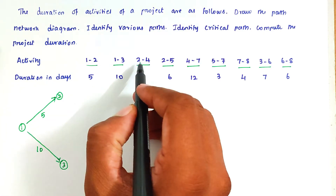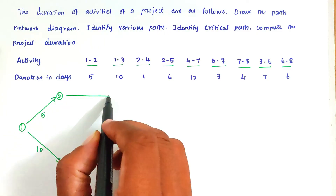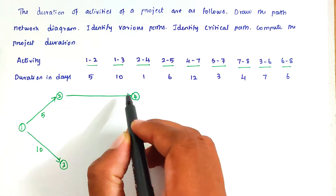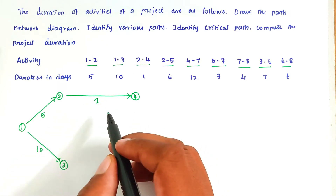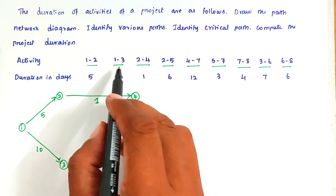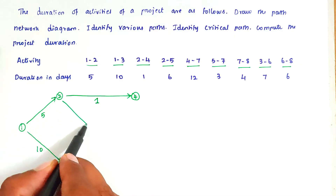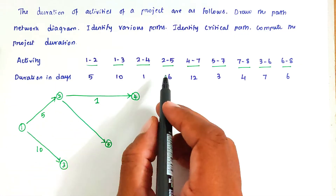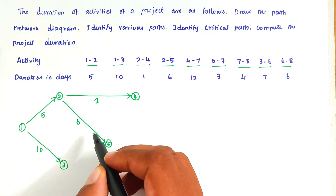Next, activity 2-4. So we can draw 2 to 4. The duration of 2-4 is 10. Next, activity 2-5. So we can draw 2 to 5 over here. The duration of 2-5 is 6.